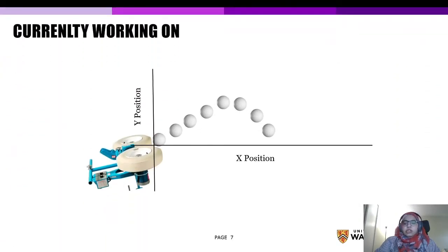So what we're currently working on is we are trying to validate that these graphs are actually what happens in real life. So what we are planning on doing is using a baseball pitching machine to launch the ball at a certain velocity and spin rate as well as a launch angle.